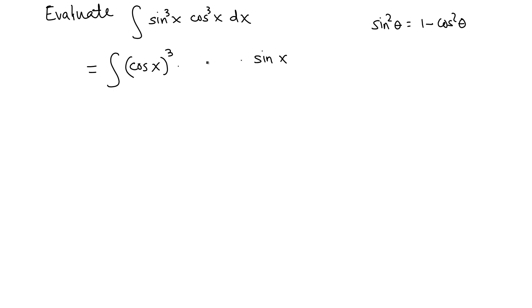Sine cube means three copies, so we still have two copies sine squared x. The goal here is to assume cosine x is u and convert sine squared x to 1 minus cosine squared x, so this will still be a function of u.